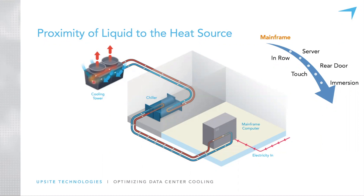In this case we had two loops of liquid and then a final loop of air to remove the heat from the room. So liquid was very close — right up against the source of the heat in the computer room.